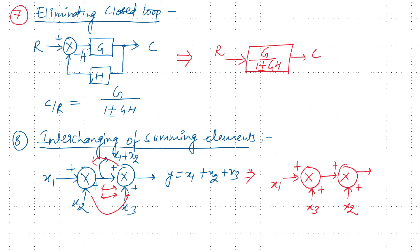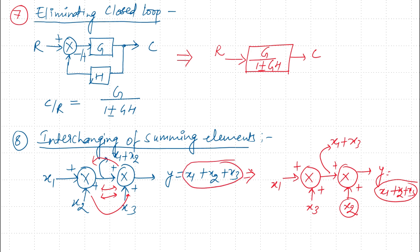The final output after interchanging is x1 plus x2 plus x3, which is the same as before. So there is no change in the output — we can always interchange summing elements and it will not affect the output.